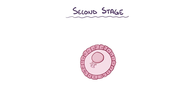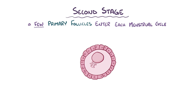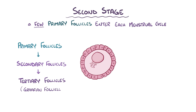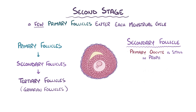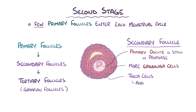The second stage of follicular development begins for a few lucky primary follicles with the first menstrual cycle in puberty, and a few more primary follicles go into the second stage with each subsequent menstrual cycle. In the second stage, the primary follicles develop into secondary and eventually tertiary, or Graafian, follicles. In a secondary follicle, the primary oocyte is still in the prophase step of meiosis I, but now the follicle has additional layers of granulosa cells as well as theca cells. Theca cells make androstenedione, which is a sex hormone precursor, and granulosa cells use the enzyme aromatase to convert it into estradiol, a member of the oestrogen family.